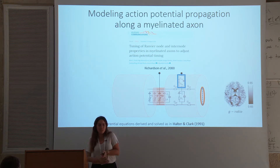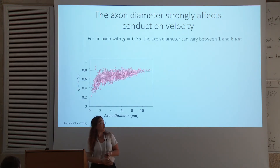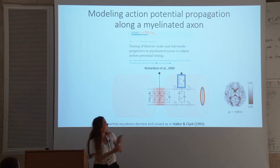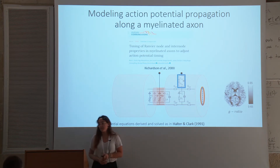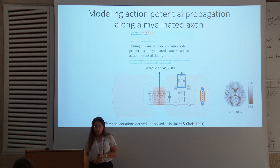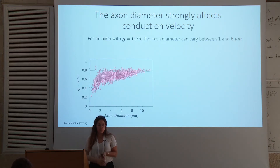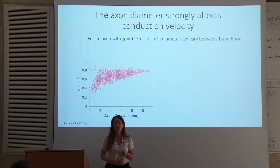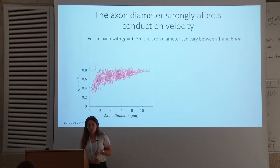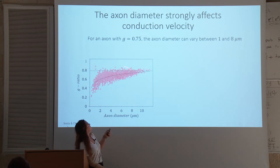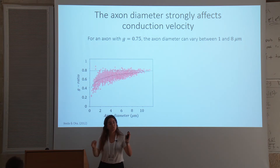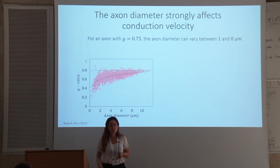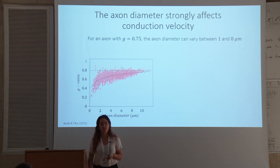But g-ratio alone was not enough. We actually need the axon diameter as well. What we initially thought about doing, since we cannot measure axon diameter directly, was to use the known relationship between g-ratio and axon diameter from the literature. The problem, as you can see from electron microscopy data, is that for a single value of g-ratio there's actually a very large range of possible axon diameters. And that's a problem because axon diameter affects conduction velocity quite greatly.